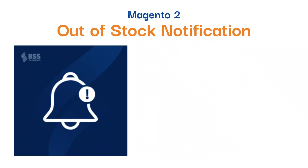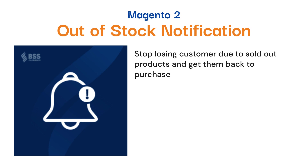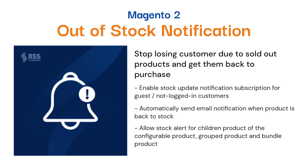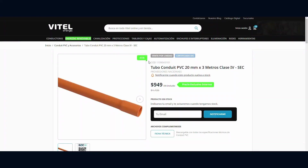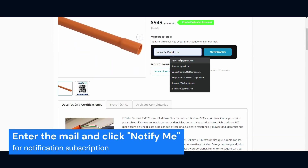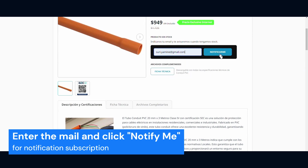On the Product Page, it's beneficial to have a Magento 2 Out-of-Stock Notification function. It helps stop losing customers due to sold-out products and get them back to purchase. This module applies even to guests and not logged-in customers, and automatically sends email to notify when a product is back in stock. It even allows stock alerts for children products of grouped or configurable products. In the Product Page of an out-of-stock product, customers enter their email in the Email Submission box and click the Notify Me button to get notified about back-to-stock status.